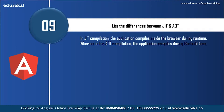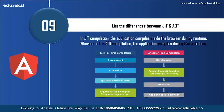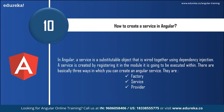Next: list the differences between JIT (just-in-time) compilation and AOT (ahead-of-time) compilation. In just-in-time compilation, the application compiles inside the browser during runtime. Whereas in AOT, ahead-of-time compilation, the application compiles during build time. Some differences are shown in the flowchart here. Next: how to create a service in Angular? A service is a substitutable object wired together using dependency injection. It is created by registering it in the module. There are basically three ways to create an Angular service: factory, service, and provider.